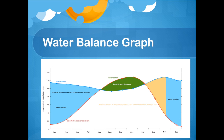When precipitation exceeds evapotranspiration, we have a surplus. But between May and September, the typical dry months, evapotranspiration is greater than precipitation. This tells us that more moisture is entering the atmosphere than leaving, which leaves us with a deficit compensated for by groundwater storage. When precipitation is once again higher than evapotranspiration, we see a period of recharge where groundwater is replaced before we return to surplus.